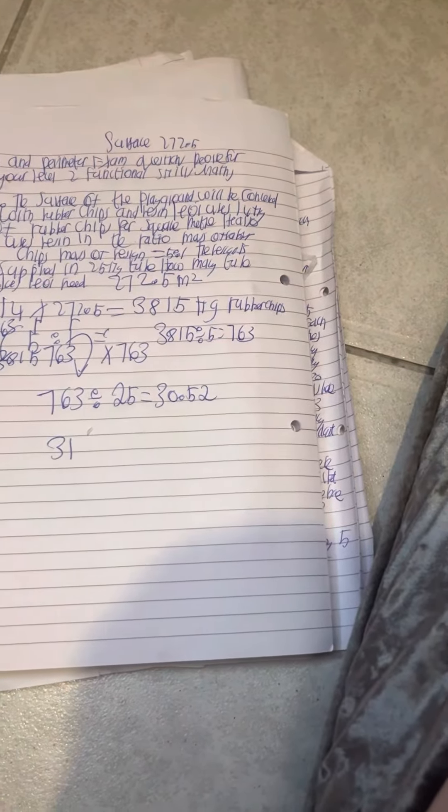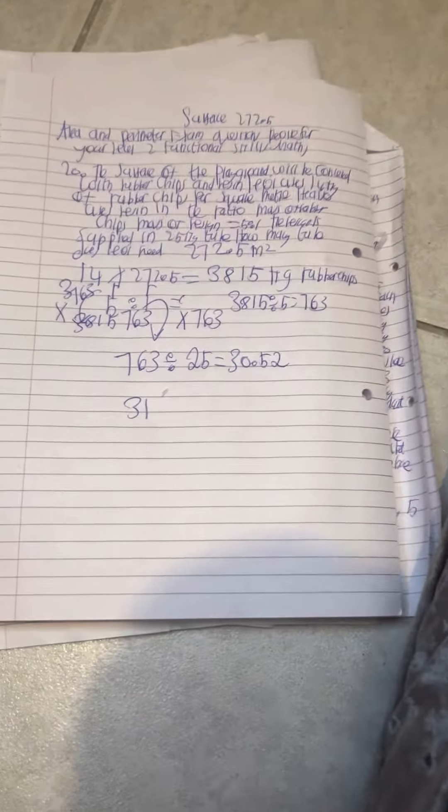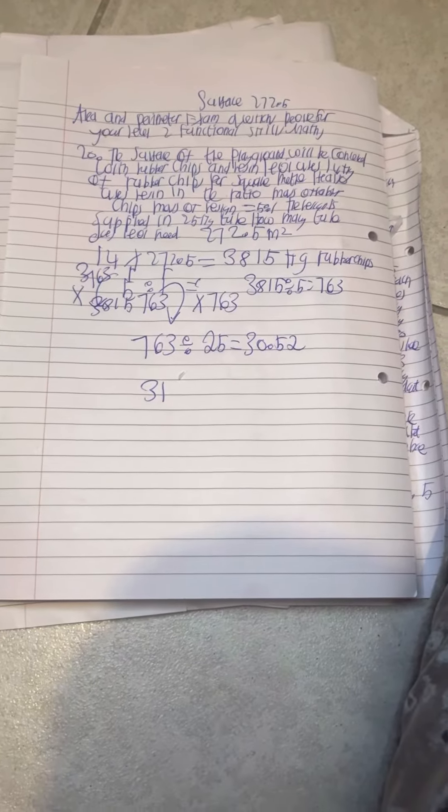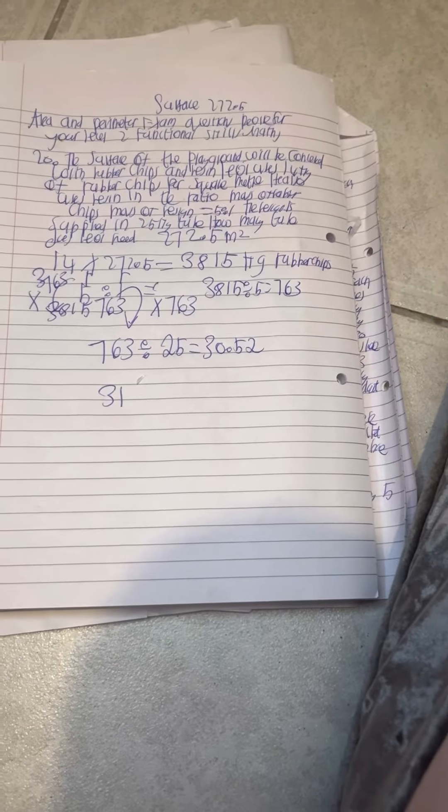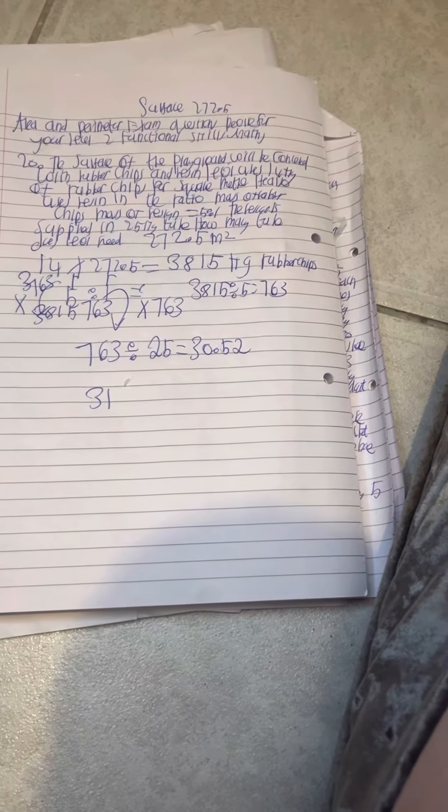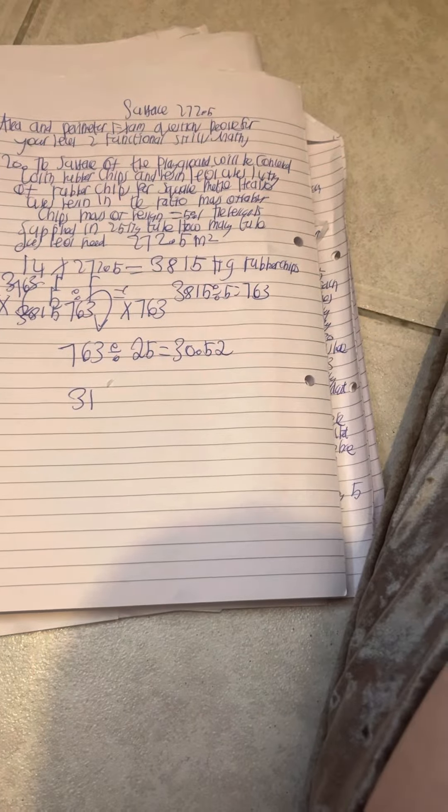He uses resin in the ratio mass of resin to rubber chips 5 to 1. The resin is supplied in 24kg tubes. How many tubes does Lev need?